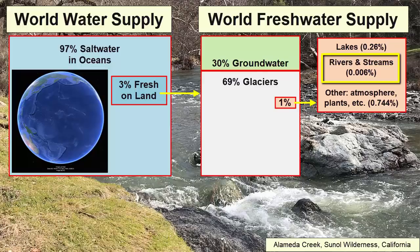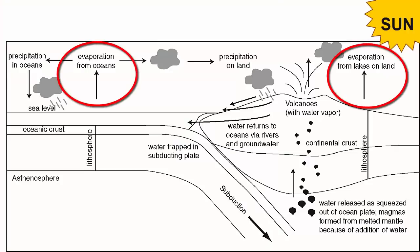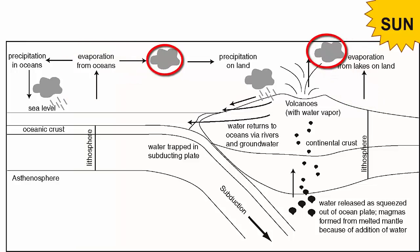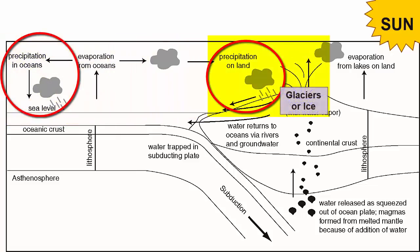How does water move around between all the different reservoirs in which it's found? Heat from the Sun evaporates water, turning it into water vapor and moving it up into the atmosphere. This atmospheric water gets moved around the planet by winds. When that air later cools, water vapor condenses back into liquid water and drops downward as rain, otherwise known as precipitation.